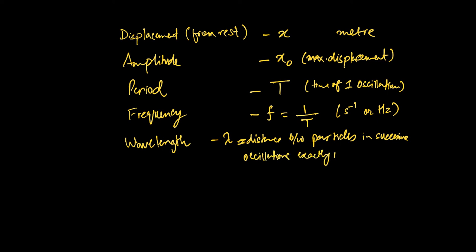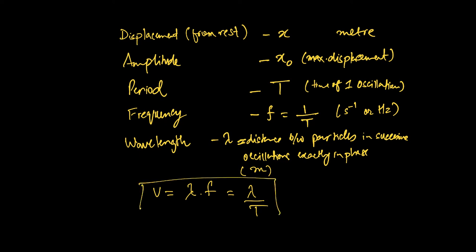The wavelength is in meters, so can we figure out the speed of this wave? We can derive the wave equation: velocity equals lambda times frequency, which is in meters times per second. Equivalently, you can take the wavelength and divide by the period T. This is called the wave equation — it relates the wavelength and frequency to the speed at which the wave travels.